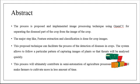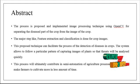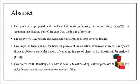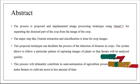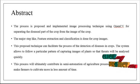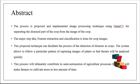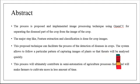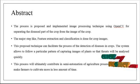This proposed technique can facilitate the detection of diseases in crops. The system captures images of plants following a particular pattern to trace the analysis quickly. This process contributes to a semi-automation system of the agricultural process, which is faster and helps farmers cultivate more in less time. In the final stage, we implement performance parameters using accuracy to estimate whether the classifier is working fine or not.